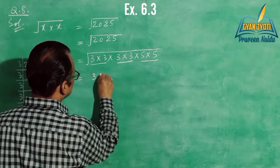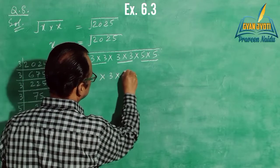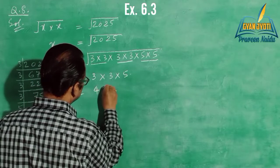By taking square root we have 3 into 3 into 5. That is 45.